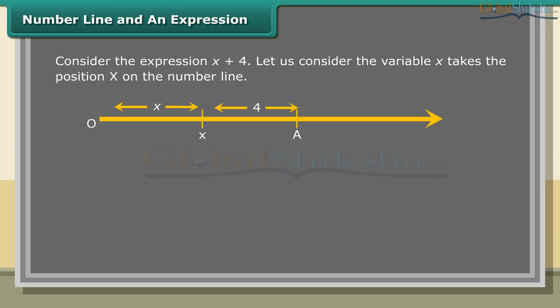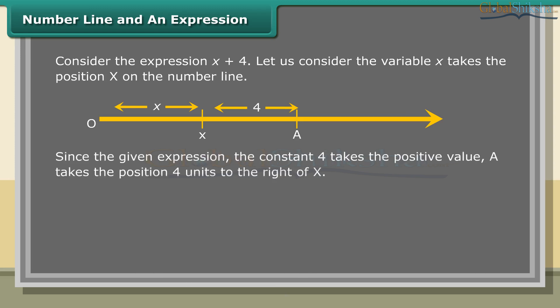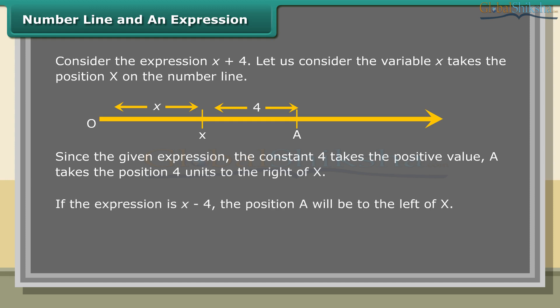Consider the expression x plus 4. Let us consider the variable x takes the position x on the number line. Since the constant 4 takes the positive value, point A takes the position 4 units to the right of x. If the expression is x minus 4, the position A will be to the left of x.